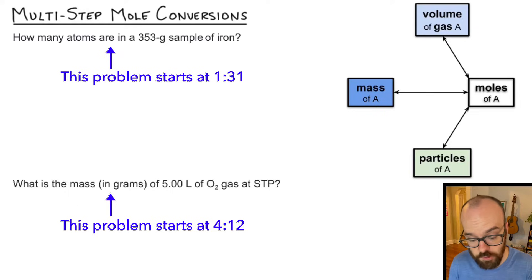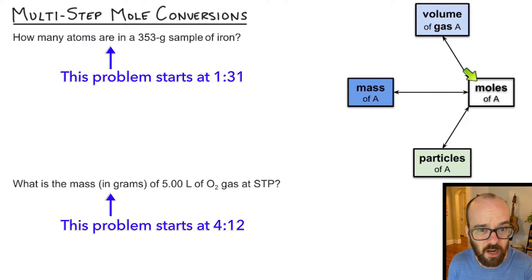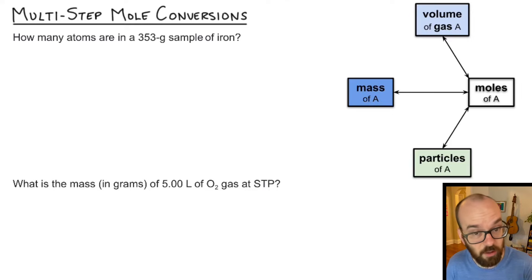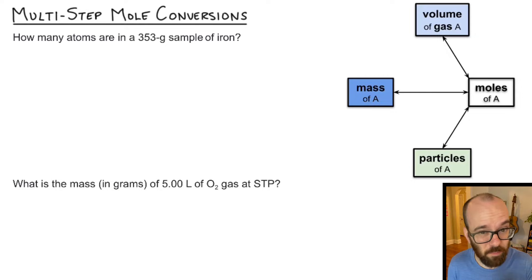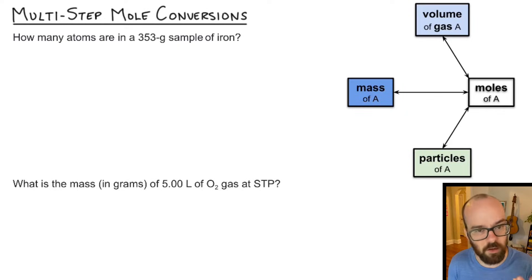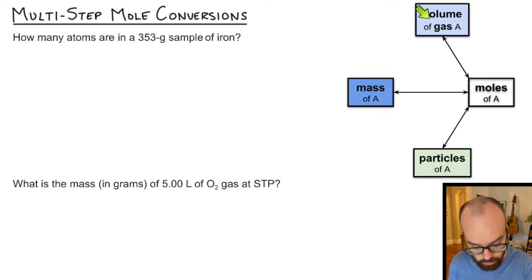Let's take a look at our conversion factors we might need to use. On the stoichiometry map, moles connects to everything else — moles is kind of the central thing that we'll convert to and from. You'll also see it says 'volume of gas A' or 'moles of A.' The A is just a variable; whatever we're converting between needs to be the same substance. Later in stoichiometry you'll learn to convert between moles of one substance to moles of another, but for now it should always be the same substance.